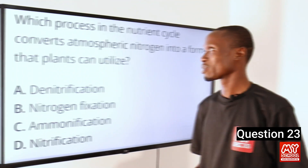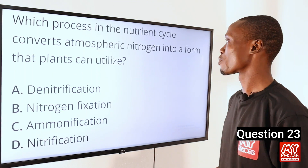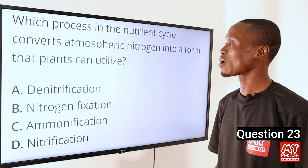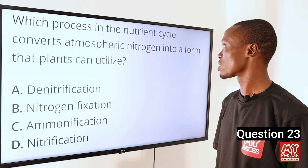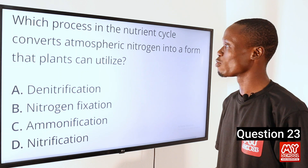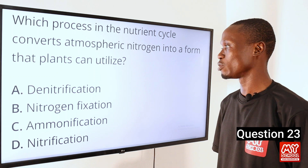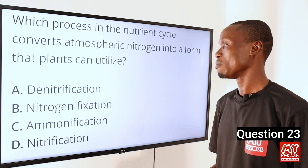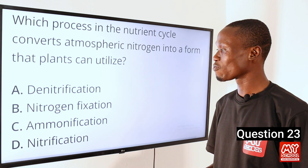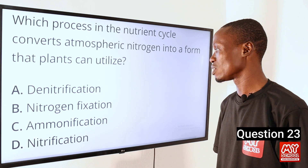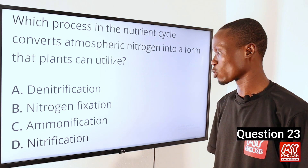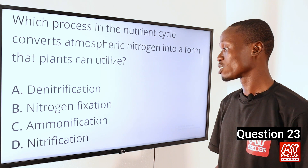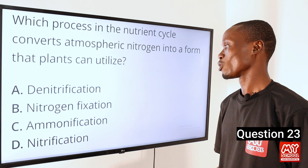Question 23. Which process in the nutrient cycle converts atmospheric nitrogen into a form that plants can utilize? A. Denitrification. B. Nitrogen fixation. C. Ammonification. D. Nitrification.